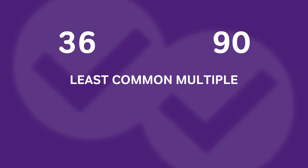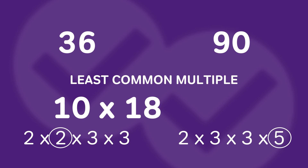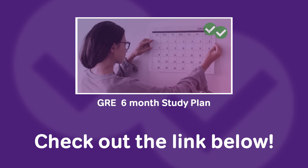To find the least common multiple, we use the greatest common divisor we already found, which is 18. Then we take the leftover factors that the numbers do not share. For 90 there's that extra 5, and for 36 there's an extra 2. We multiply those leftover factors together: 2 × 5 = 10. Then multiply that by the GCF: 18 × 10 = 180. So the least common multiple of 36 and 90 is 180.